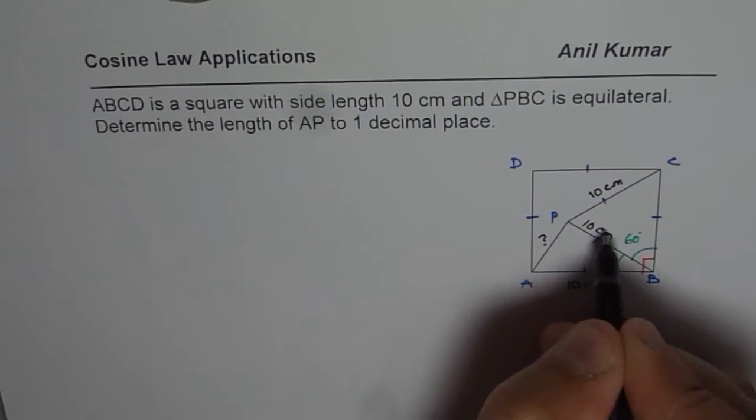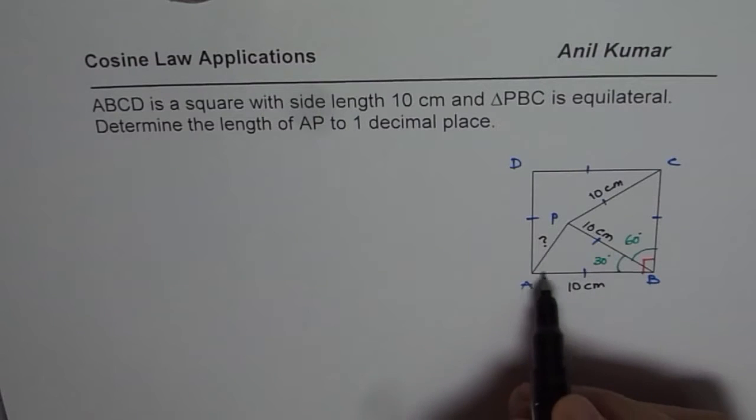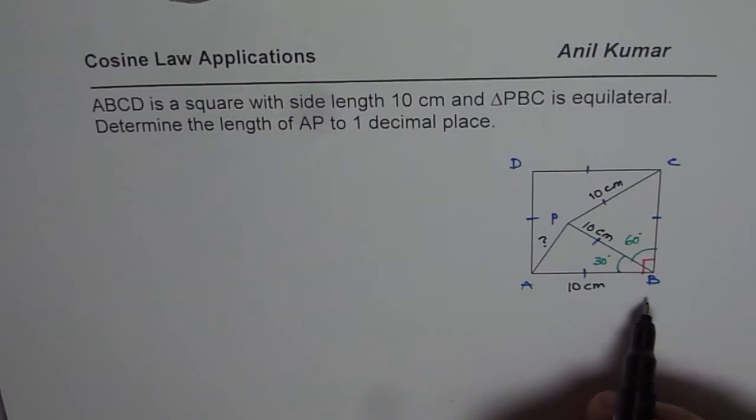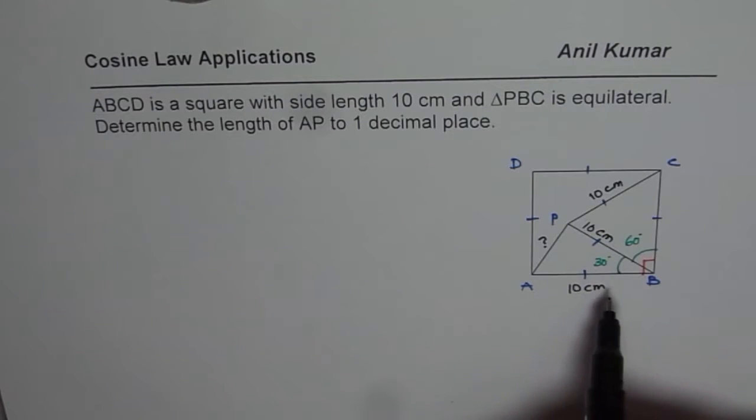So both sides are 10 cm with 30 degrees and we need to find AP. So once you analyze it like this, it becomes a very simple question.